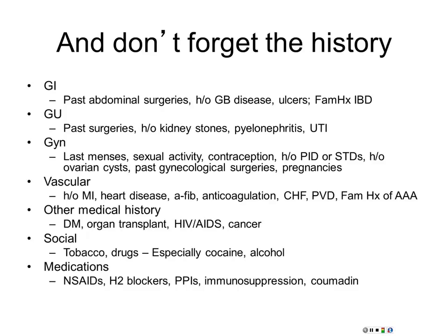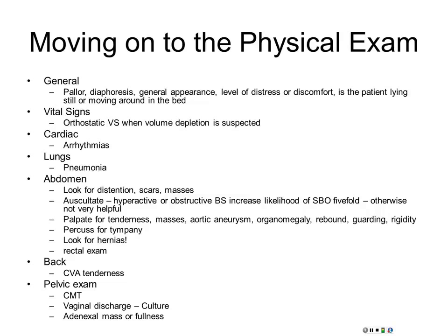Physical exam: pallor, diaphoresis, general appearance. At this point you know when a patient is sick or not — this guy's sick, this guy's not sick. When you look at someone with an acute abdomen, you're trying to figure out: are they septic and dying from a perforated viscus, or is there something else? Once you put them in the 'something else' category, you go down the pathway of labs and scans. If they're acutely ill, you're in the critical care pathway. Orthostatic vital signs are helpful to differentiate sick versus not sick.